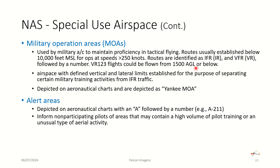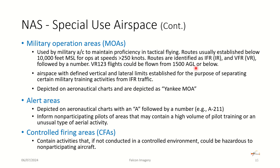Alert areas are depicted with an A followed by a number, informing non-participating pilots of high-volume activity areas such as pilot training, unmanned drone flying, or glider activity. Controlled firing areas contain activities that, if not conducted in a controlled environment, could be hazardous to non-participating aircraft — but they're not typically shown on sectional charts.